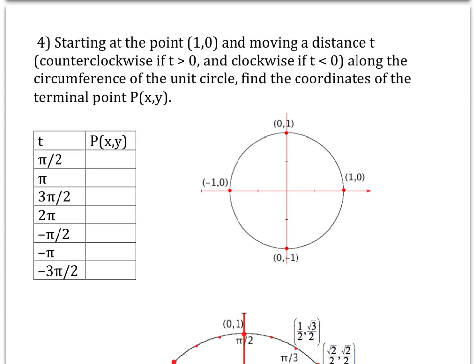The convention we follow is we start at the point (1, 0). If we go a positive distance, that's counterclockwise. If we go a negative distance, that's clockwise. Going t = π/2 units puts you at (0, 1). Going π units puts you at (−1, 0). Going 3π/2 units puts you at (0, −1). And going 2π units brings you all the way back to (1, 0).